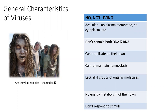Viruses do have genetic material, but it's an either/or situation. Some viruses use DNA as their genetic material; some use RNA, but they do not have both. Living things have both DNA and RNA because we use DNA to create RNA, which we then use to make proteins. All living things have both in their cells, but viruses do not have cells and they do not contain both DNA and RNA.